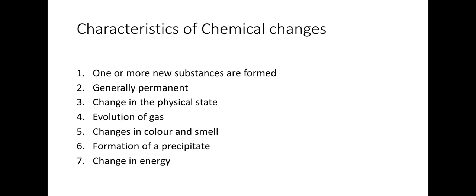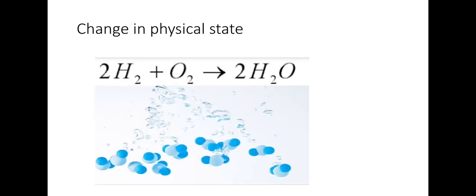Here are the characteristics of chemical changes: one or more new substances are formed; these changes are generally permanent; there is a change in the physical state; evolution of gas; changes in color and smell; formation of a precipitate; and change in energy. Let us discuss all of these.